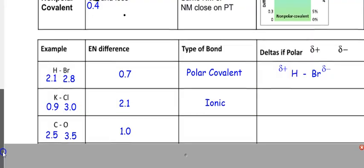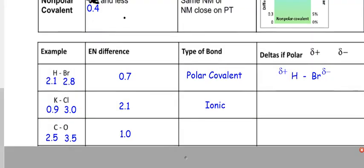It's polar covalent. It's within that range. What do I have to do? Deltas if polar. Well, it is polar, so I need to do this, and which one loves electrons more? The carbon at 2.5 or the oxygen at 3.5? I think it is the oxygen at 3.5, so it's partially negative. Therefore, the carbon is partially positive. Let's do one more together, and then I want you to do some more on your own.